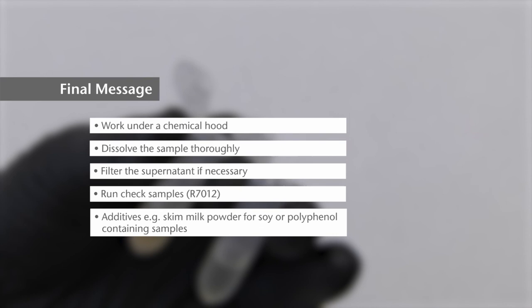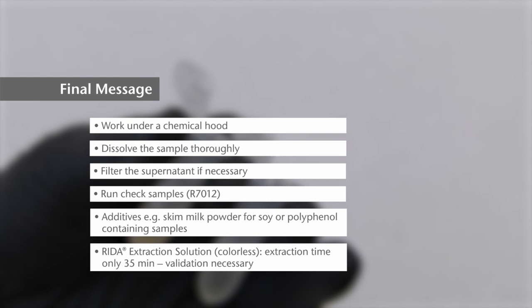Add additives, for example skim milk powder, for soy or polyphenol-containing samples. An alternative to the cocktail patent is RIDA extraction solution. The sample preparation is faster when using the extraction solution, only 35 minutes compared to one hour 50 using the cocktail patent.